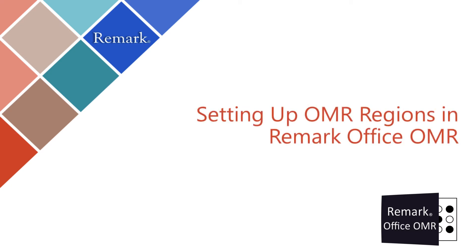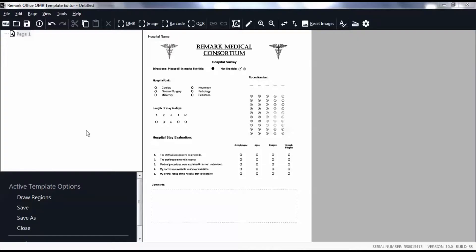In this video you will learn how to use and set up various OMR regions in Remark Office OMR. OMR regions are typically made up of bubbles or check boxes that collect objective or multiple choice data on your form. We will use a hospital stay satisfaction form in our demonstration.